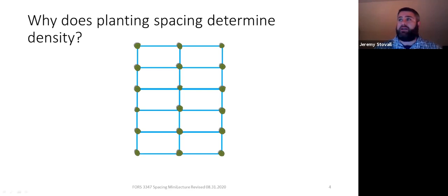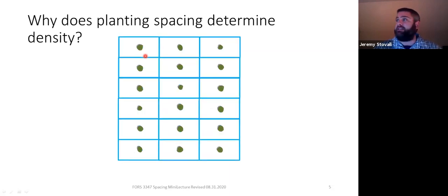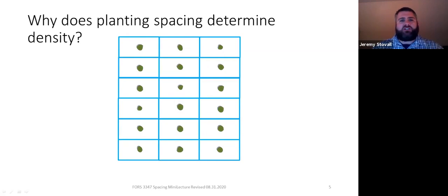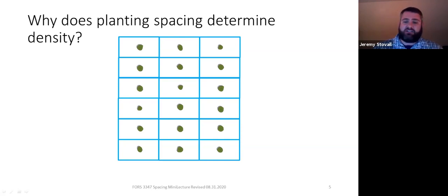Here is why spacing and density — or trees per acre — are linked to one another. If I move the boundary lines halfway between the rows and halfway between the trees within each row, what I get is rectangles that are the same size as those between the four trees at each corner. So if my trees are 8 feet apart within a row and my rows are 9 feet apart, then each tree has a rectangle representing its growing space that is 8 feet by 9 feet. The spacing of your plantation dictates the growing space each tree receives, and that is why density is determined by spacing.